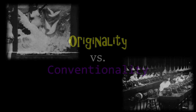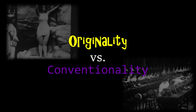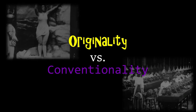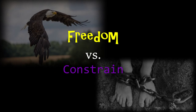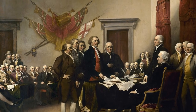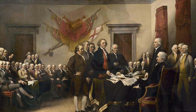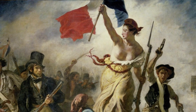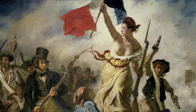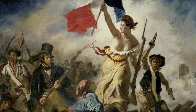Until now we have viewed the tension between firstness, secondness, and thirdness as the tension between originality and conventionality. But there is a more political aspect of this tension as well — the tension between complete individual freedom and the constraints of norms, traditions, and culture. The modern era of enlightenment and liberalism is centered around the idea that individuals should be completely free from surrounding environment or culture.